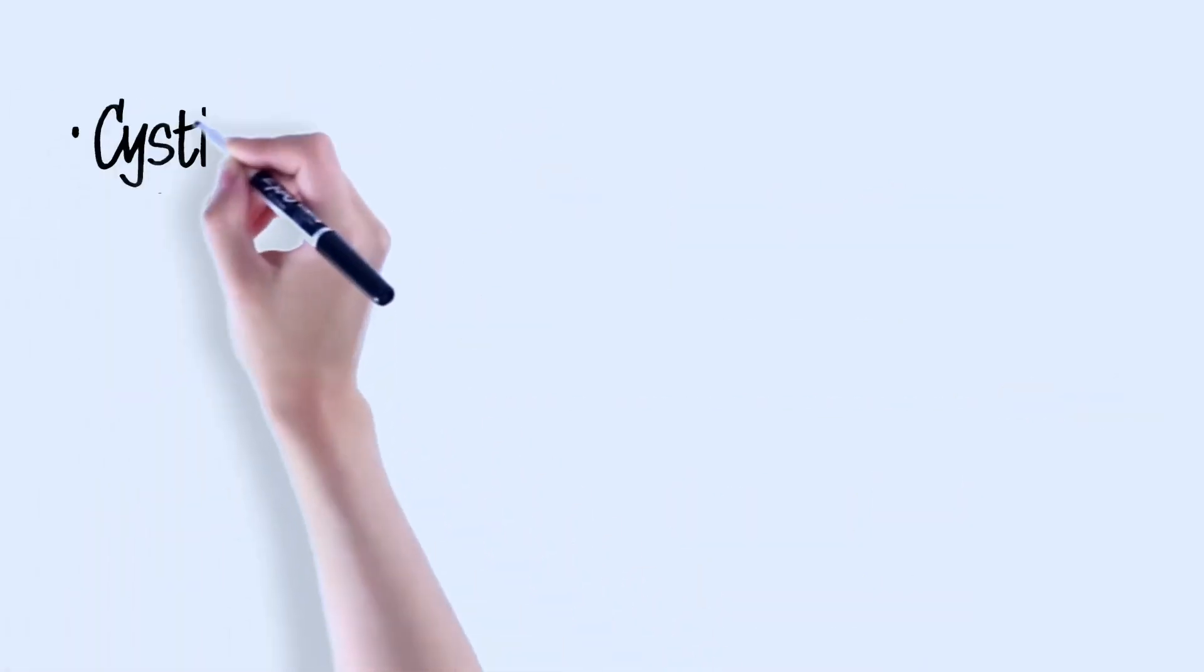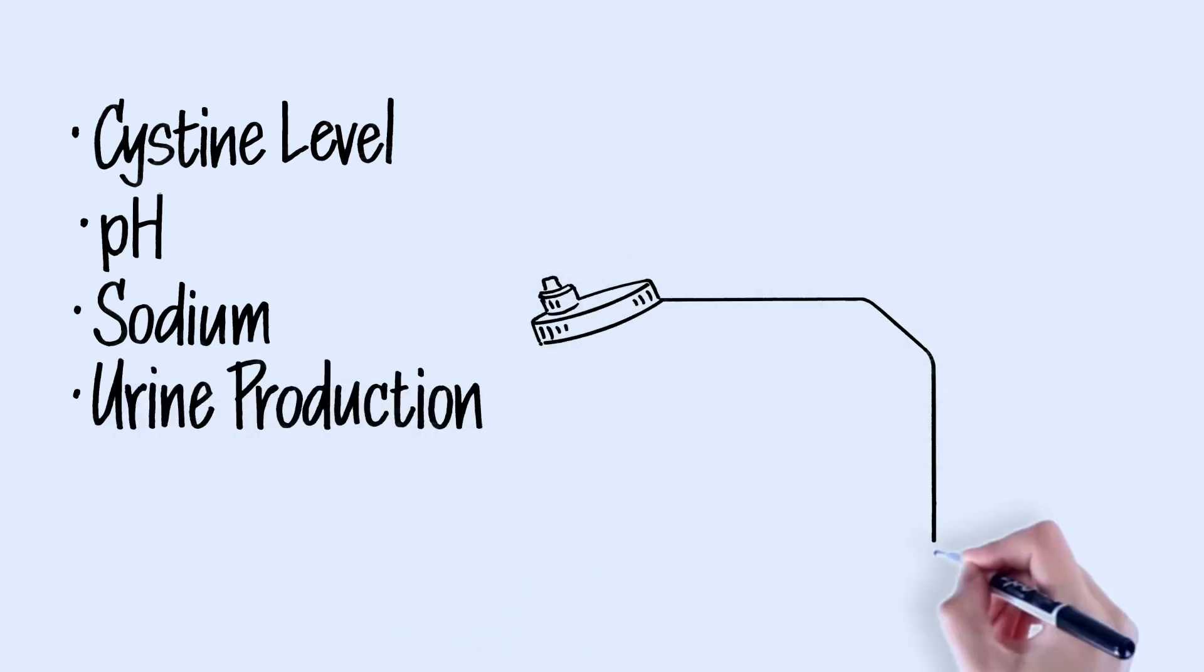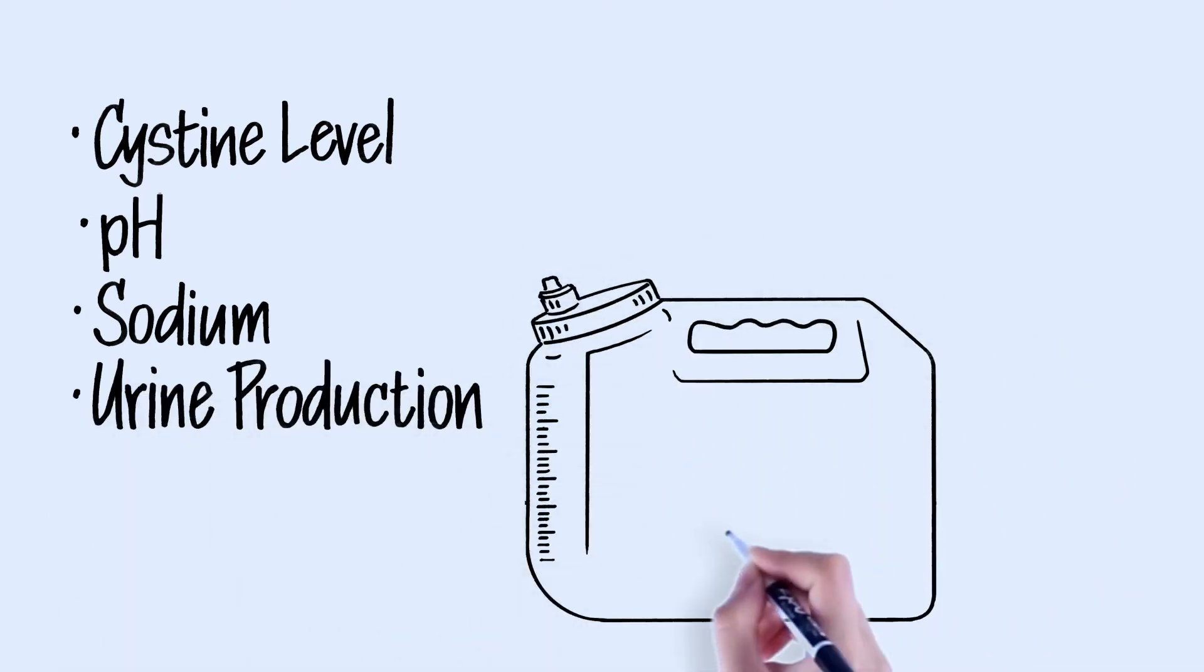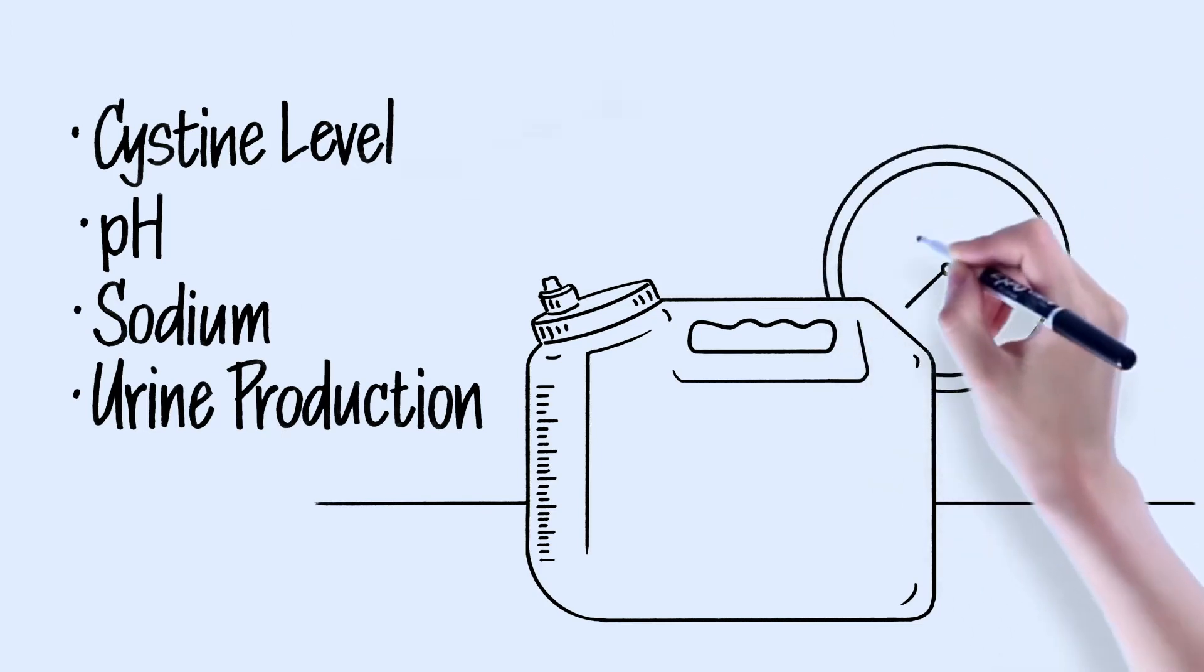In addition to cystine levels, the test will measure other levels in your urine such as pH, sodium, and the amount of urine you produce over 24 hours. These measures also may affect your chances of forming new stones.